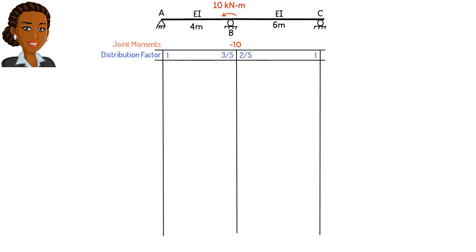We start the iterative process by balancing all the joints. Joints A and C are balanced already. The total moment at each joint is zero. To balance joint B, we calculate the total moment at the joint. It is negative 10. We then balance it by distributing positive 10 to the members connected to the joint in proportion to their distribution factor. This means we write 10 times 3 over 5, or 6, in the left column. And we write 10 times 2 over 5, or 4, in the right column. Notice that now the sum of the moments at the joint equals zero.